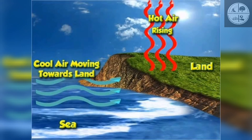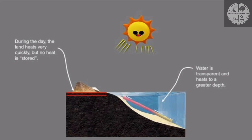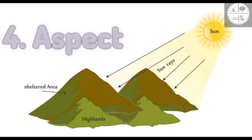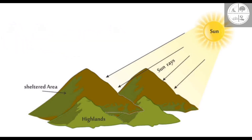Places near the ocean usually experience milder temperatures due to the sea's ability to absorb and release heat slowly. Inland areas heat up and cool down faster. Number four: aspect. Aspect refers to the direction a slope faces.